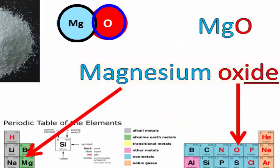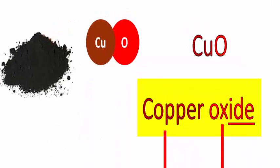So in magnesium oxide, there's only one Mg for every one O, so we don't need any little numbers. Copper oxide is also like that.